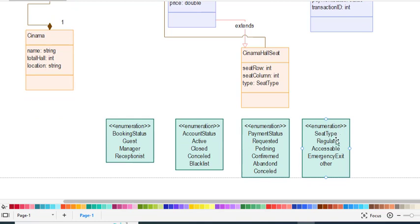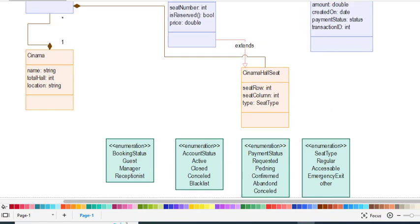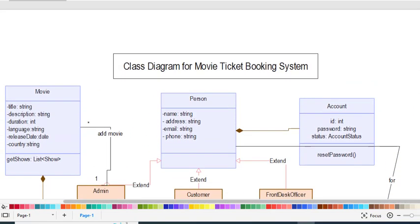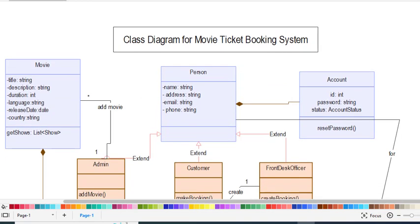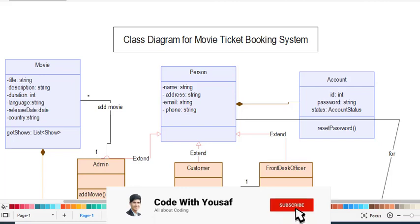The SeatType enumeration values are: regular, accessible, emergency, and others. The PaymentStatus enumeration values are: requested, pending, confirmed, abandoned, and cancelled. The AccountStatus enumeration values are: active, closed, cancelled, and blacklisted. The BookingStatus enumeration values are: guest, manager, and receptionist. That concludes the class diagram for the movie ticket booking system. If you liked the video, please subscribe and share with friends. Thanks for watching.